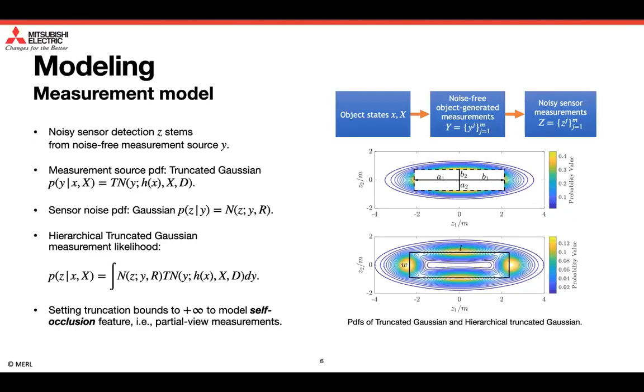We then proceed to introduce the new measurement model presented in this work. We assume that the noisy sensor detection stems from the noise-free measurement source. See the figure on the top right for the modeling diagram. The measurement source is truncated Gaussian distributed. See the figure on the right for an illustration of the PDF. The sensor noise is Gaussian distributed. The noisy sensor detection likelihood is in a hierarchical truncated Gaussian, obtained as a convolution of a truncated Gaussian and a centered Gaussian. Its PDF is illustrated in the figure on the bottom right.